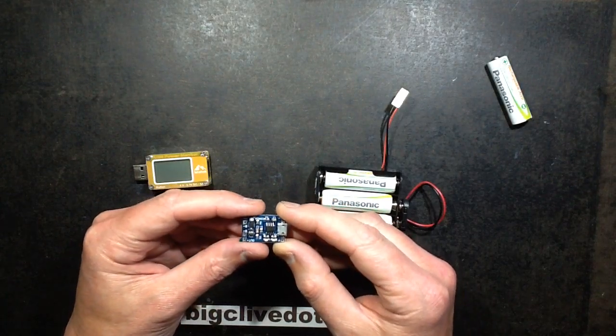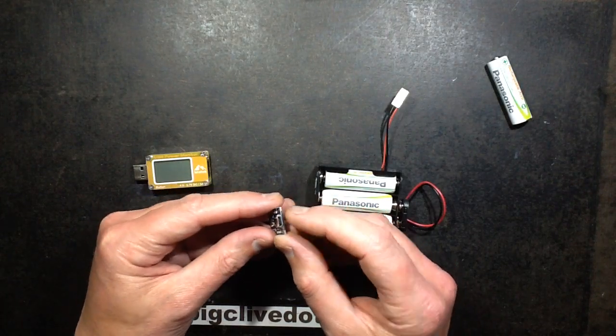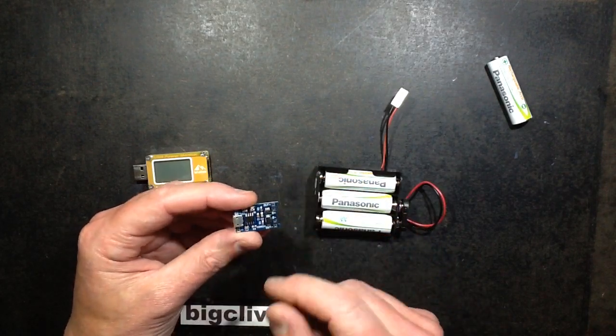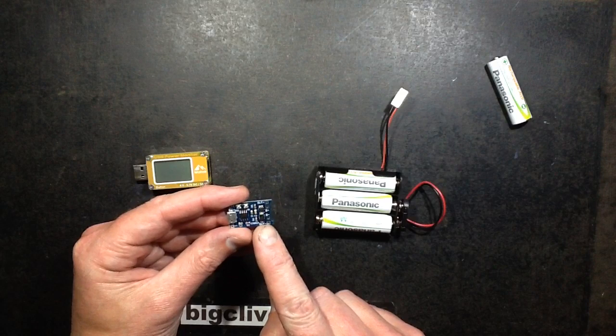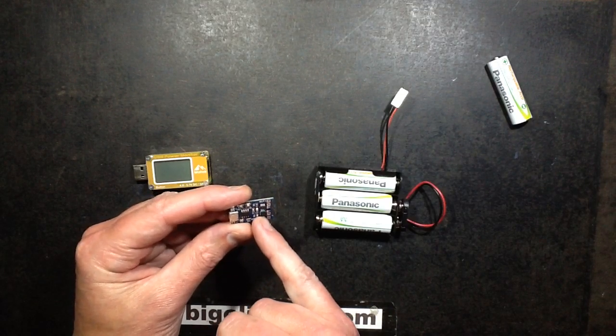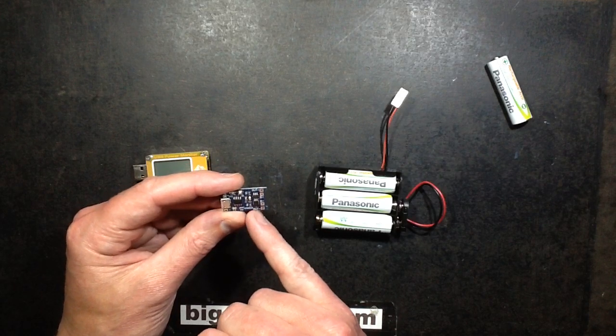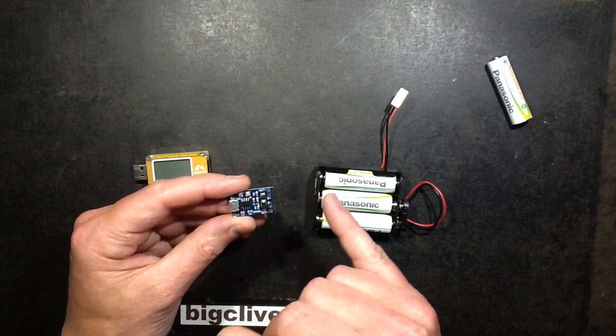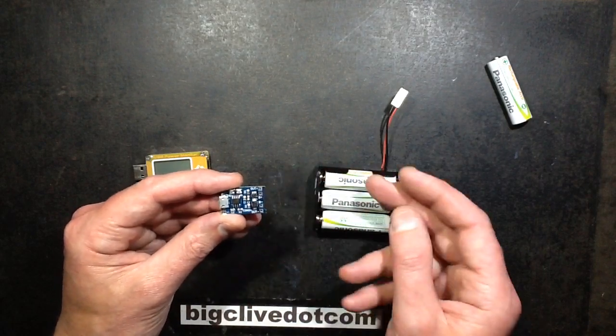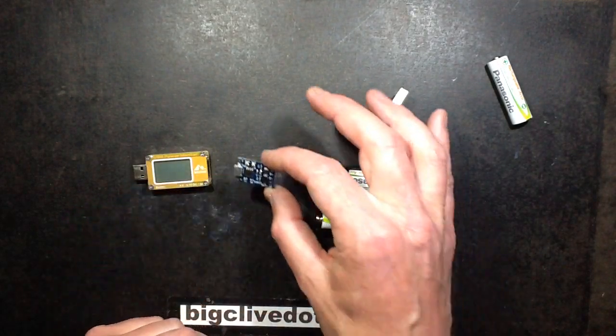I got some of these lithium charging modules off eBay, the ones that take micro USB in and you connect the cell and it controls the charging. These ones also have discharge protection - as soon as the voltage drops below about 2.7 volts or just below 3 volts, it cuts the power off from the cell and stops it being discharged.